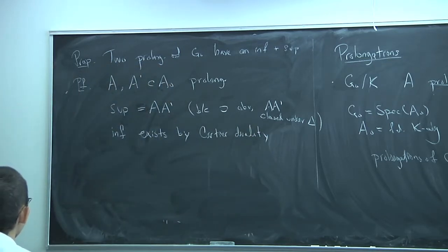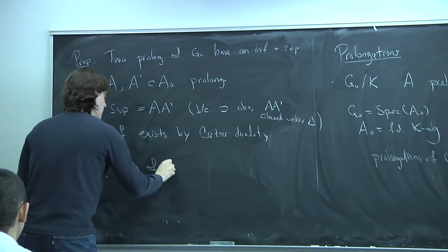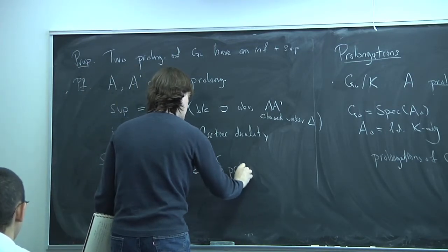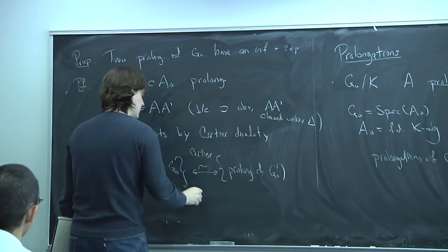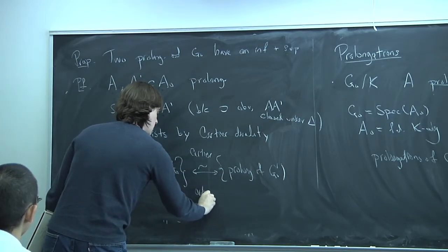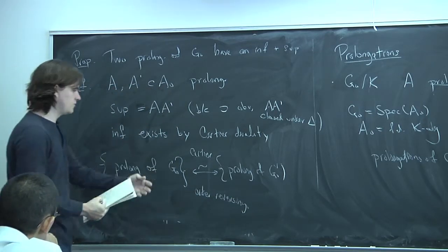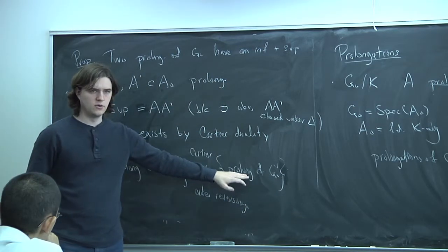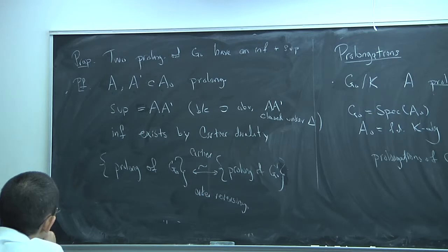The prolongations of G₀ are in bijection with the prolongations of its Cartier dual, via Cartier duality, and this bijection is order-reversing. So we have two posets — one for prolongations of G₀ and one for its dual — and these posets are opposite to each other. Whatever structural fact you prove about one is symmetrical.